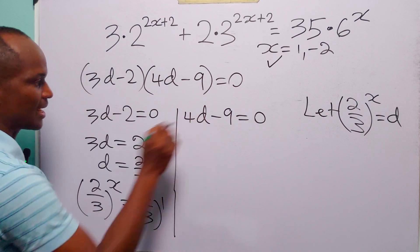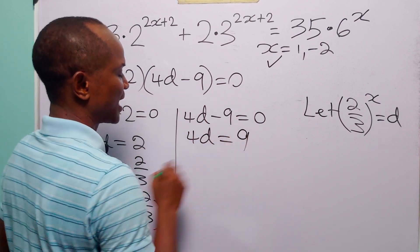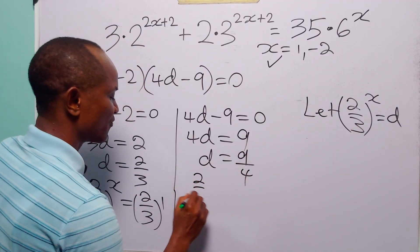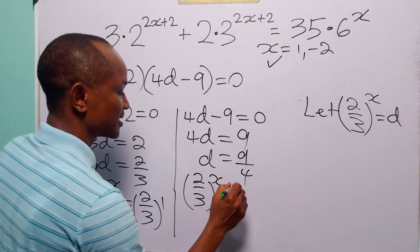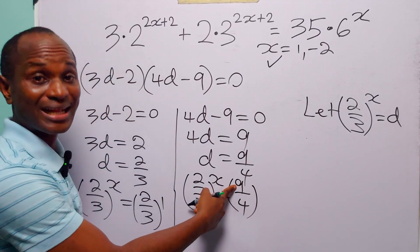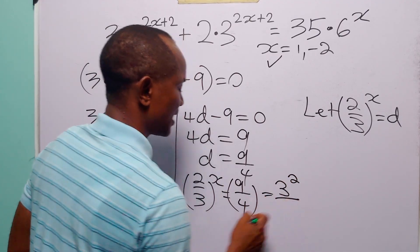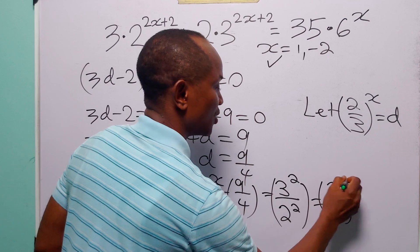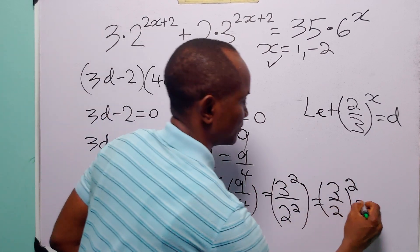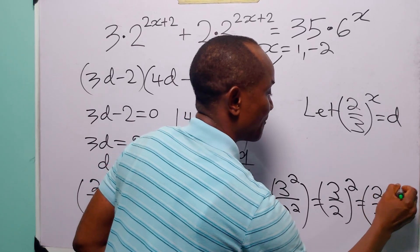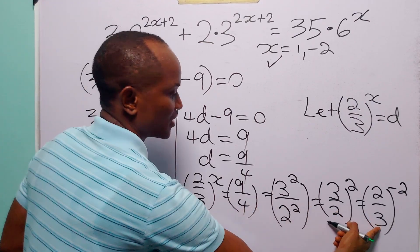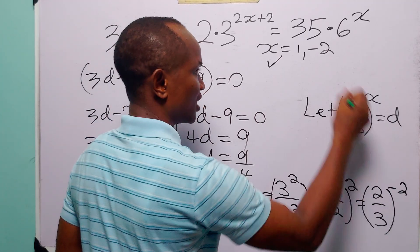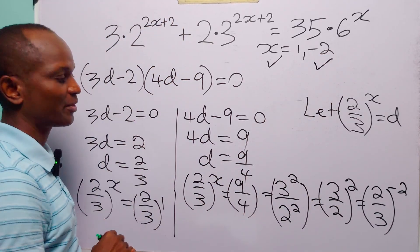From 4d minus 9 equals 0, d equals 9/4. Since d equals (2/3) to the power x, we have (2/3)^x equals 9/4. Now 9 is 3 squared and 4 is 2 squared, so 9/4 equals (3/2)^2 equals (2/3)^(minus 2). Equating exponents gives x equals minus 2 — the second root from the first method.